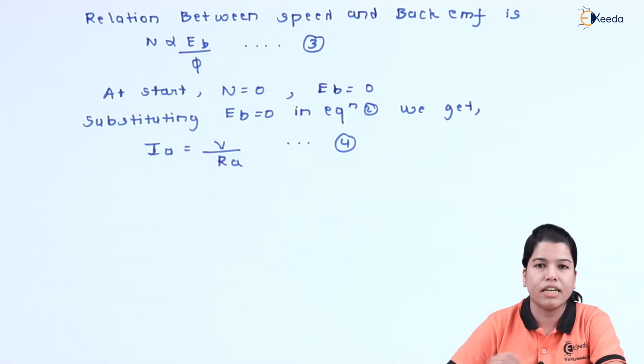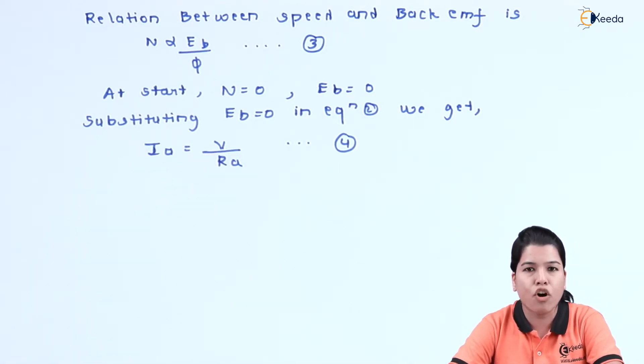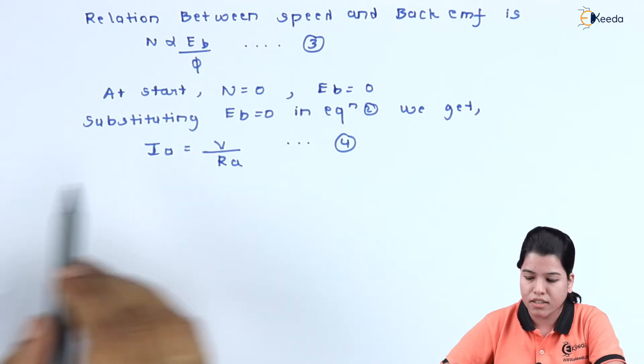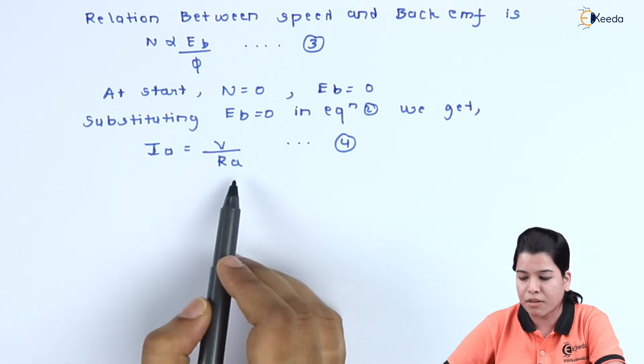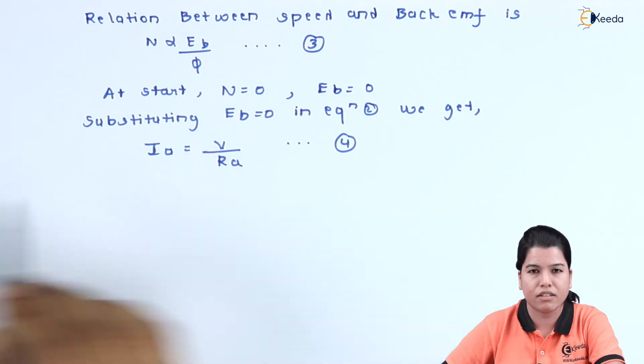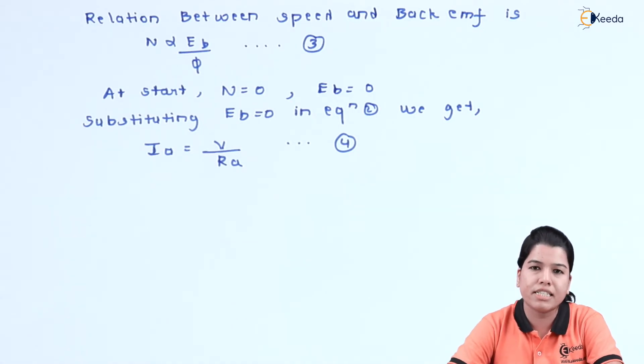If we substitute the value of Eb is equal to zero in equation 2, we get Ia is equal to V divided by Ra. Now, the supply voltage is almost constant. Hence, the armature current basically depends upon the armature resistance Ra. The value of armature resistance is very low. Hence, at starting, if the value of armature resistance is low, very high current will flow through the armature of the DC motor.